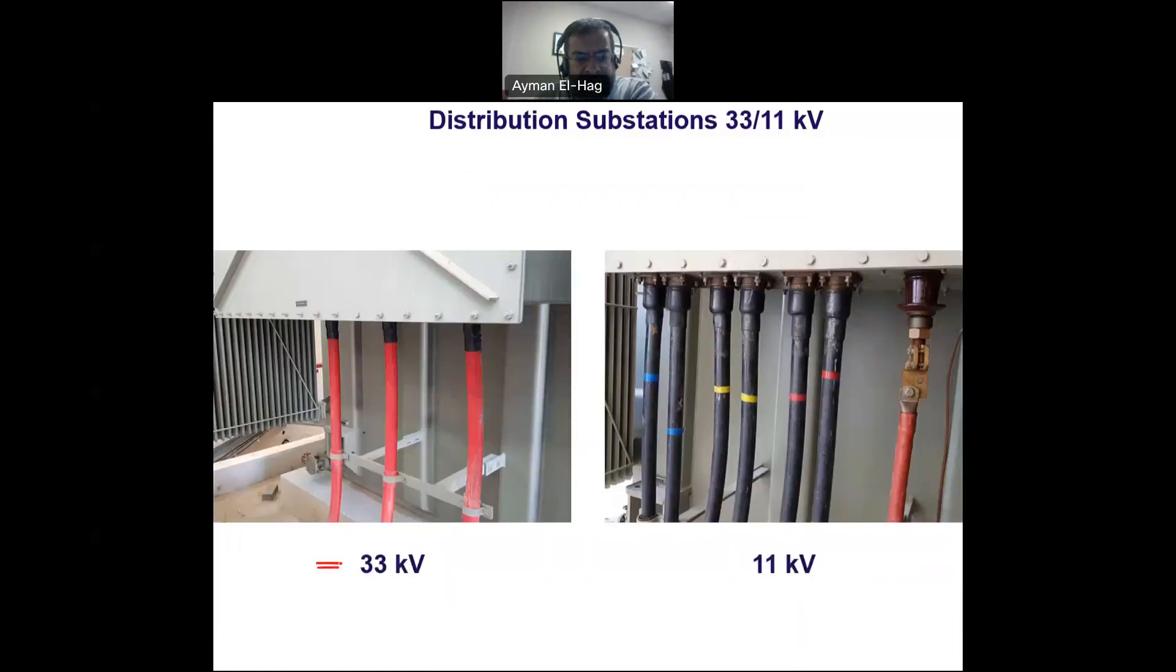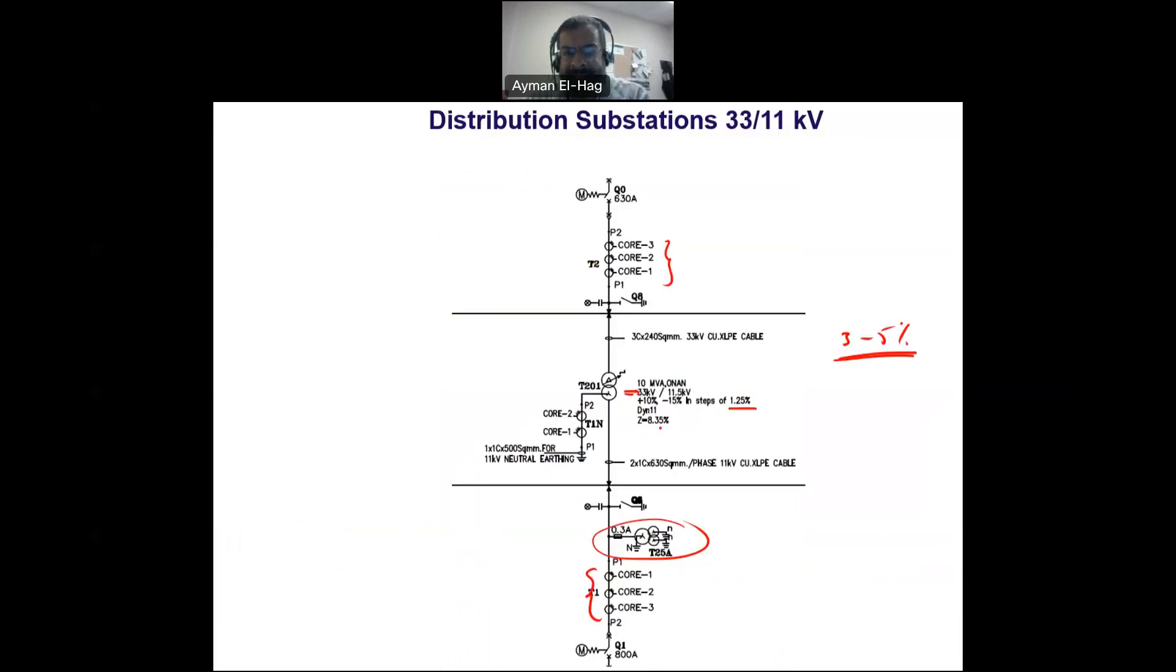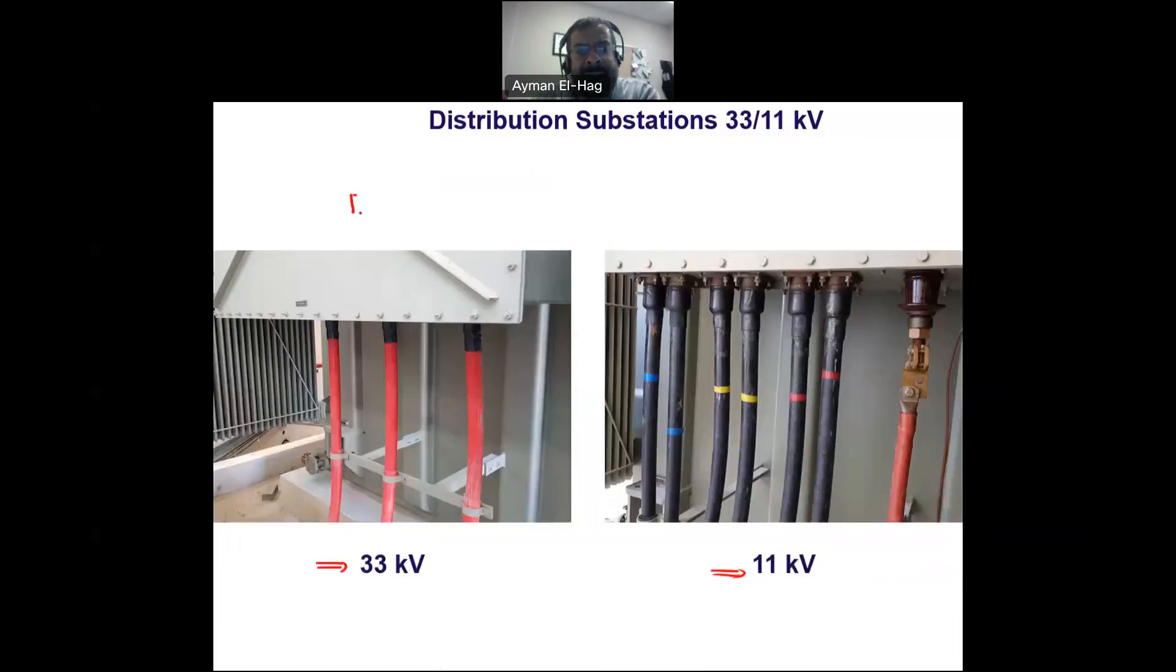This is the high voltage side, and this is the low voltage side. The transformer is Dyn11. At the high voltage side, it's connected as delta, and at the low voltage side, it's connected as wye with neutral. In the delta, we need only three conductors. These are the three conductors at the high voltage side, but for the low voltage side, we need four conductors, three for the three phases and one for the neutral.